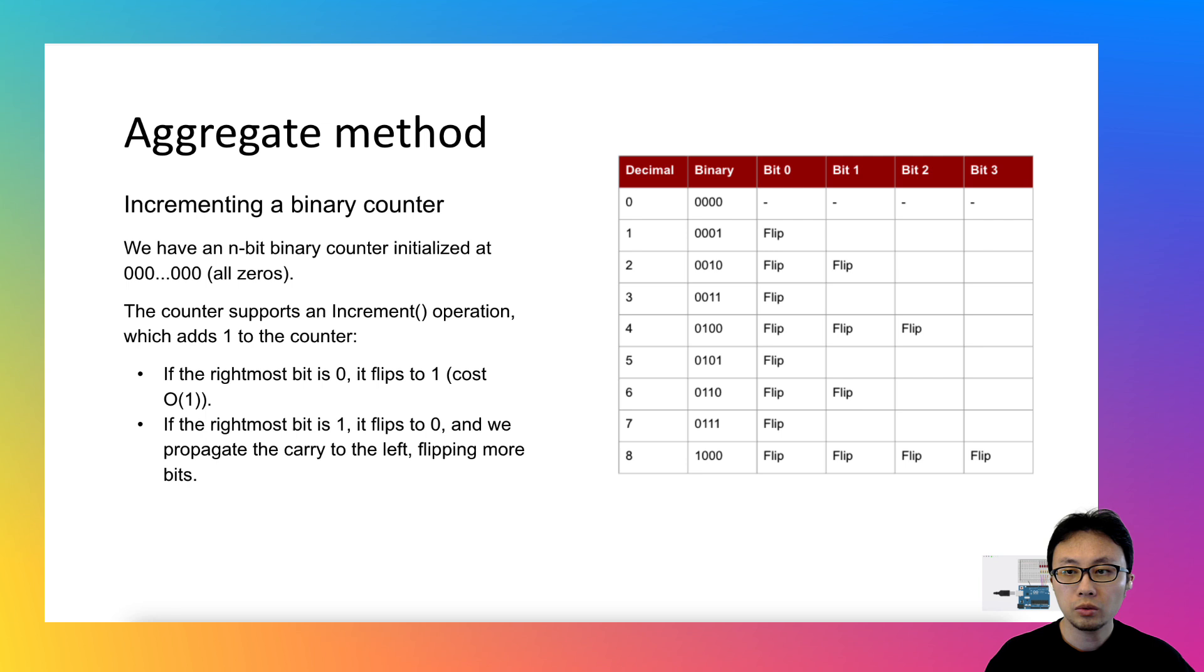However, we need to know the pattern of how the cost varies to figure out what they add up to. If you look at the 4 columns, starting from bit 0 and end with bit 3, you will see that the rightmost bit, I mean bit 0, always flips in each increment operation.